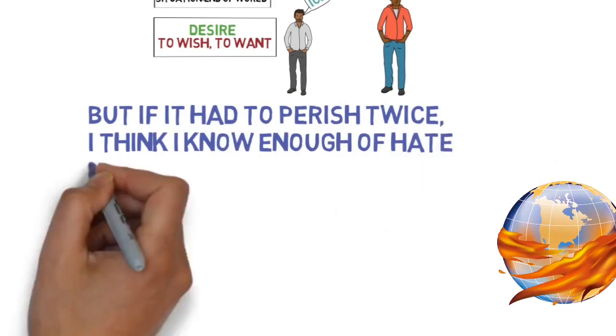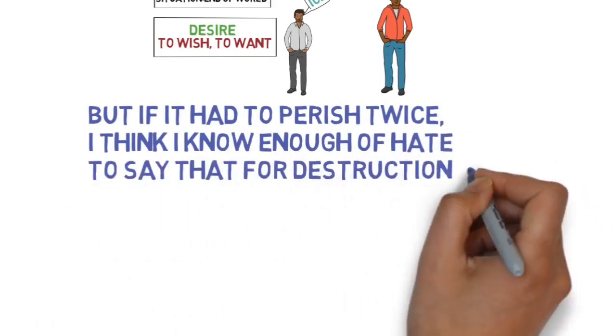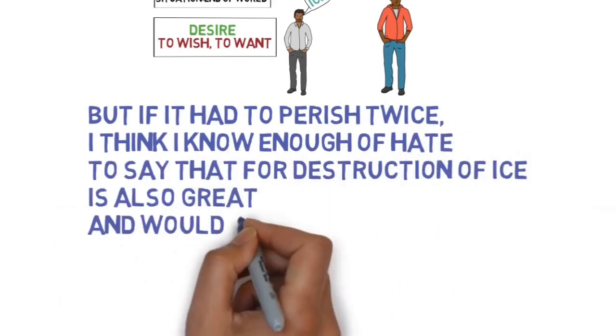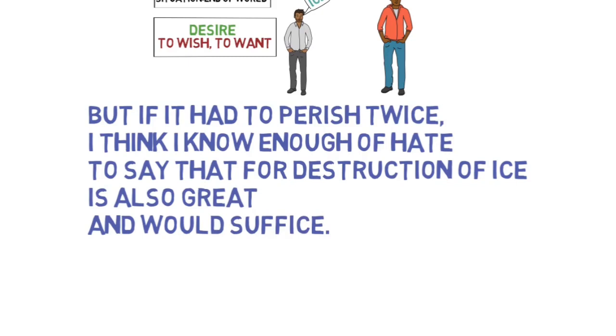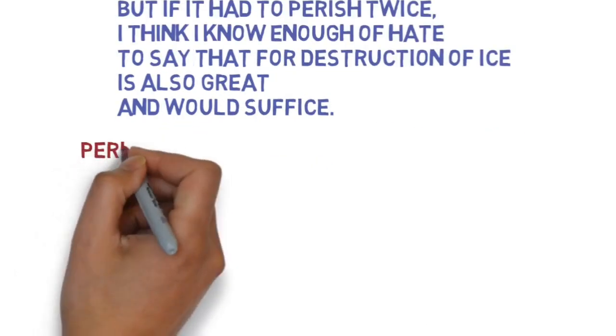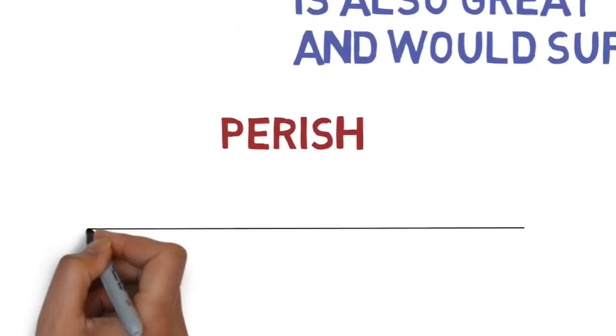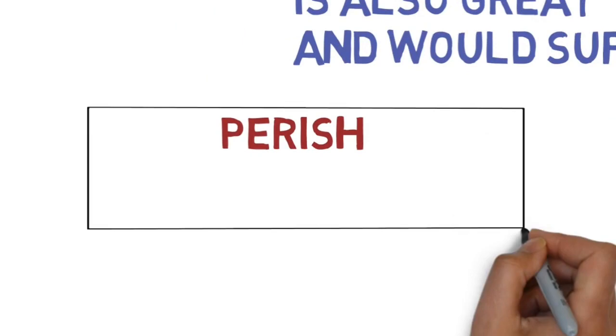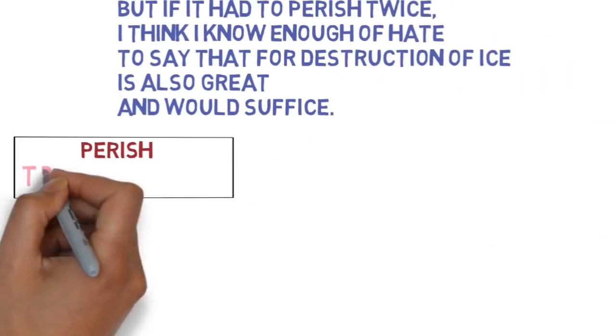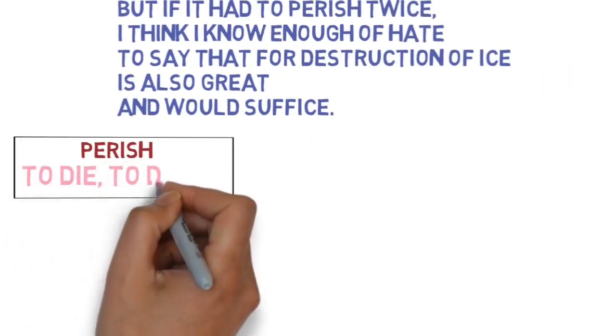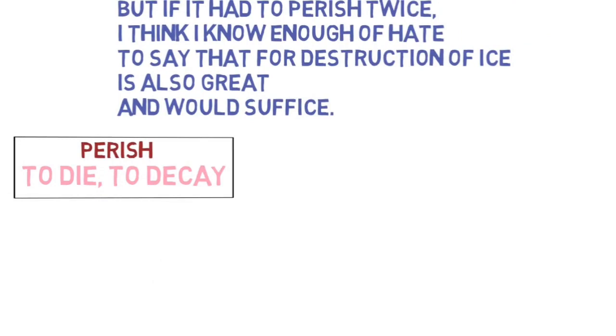But if it had to perish twice, I think I know enough of hate to say that for destruction ice is also great and would suffice. Now Robert Frost is saying that if this world will perish, or die, or decay, if this world will die again, then it will be from hate.